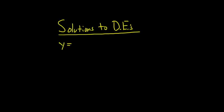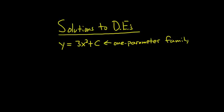Say you have something like y equals 3x squared plus c. This is called a one-parameter family of solutions. You have infinitely many solutions, one for each choice of c.